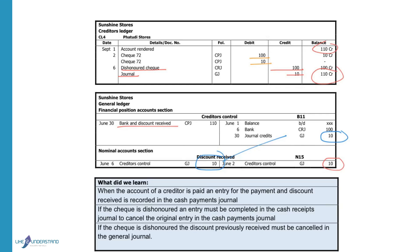When the account of a creditor is paid, an entry is recorded in the cash payments journal and the payment and discount received are posted to the general ledger. If the account is dishonoured, an entry must be completed in the cash receipts journal to cancel the original check payment. For the discount that was received, we have to do an entry in the general journal to cancel the discount because we will not receive the discount anymore.